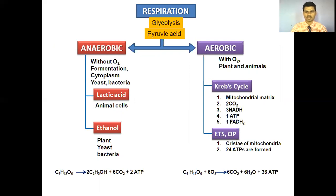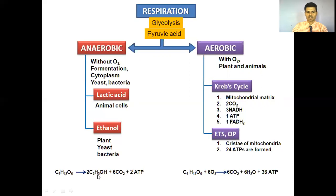The common step in both respirations is glycolysis. Glycolysis means breakdown of glucose molecule into two molecules of pyruvic acid. Anaerobic respiration takes place without oxygen, also called as fermentation, and it totally takes place in the cytoplasm of yeast and bacteria. There are two types: lactic acid fermentation, which takes place in animal cells, and ethanol fermentation, which takes place in plant, yeast, and bacterial cells. In anaerobic respiration, two molecules of alcohol are produced from pyruvic acid and only two ATPs are formed.